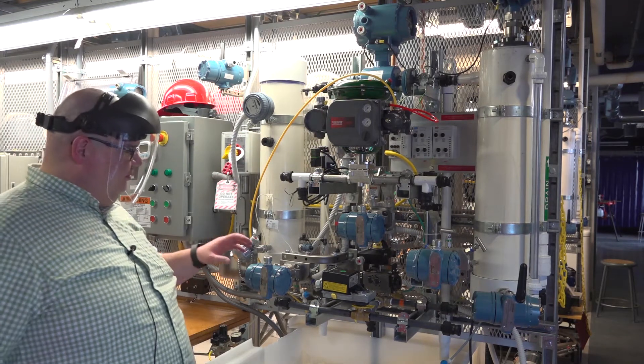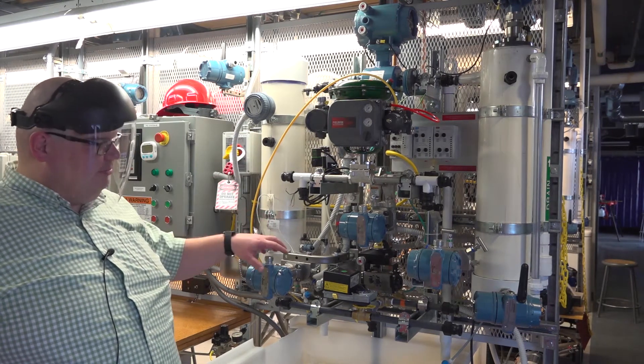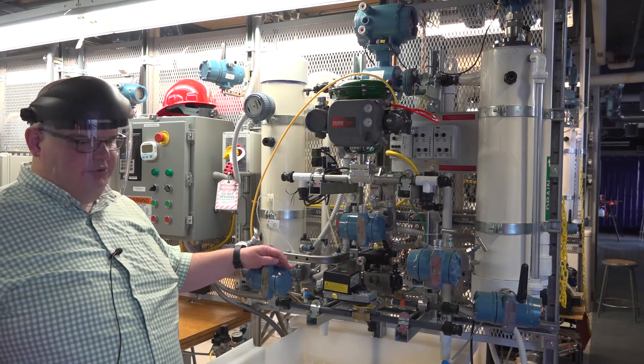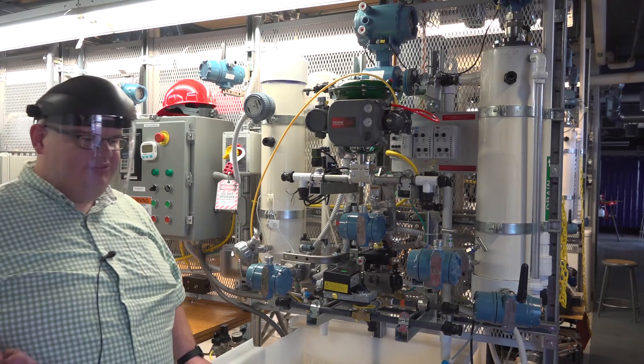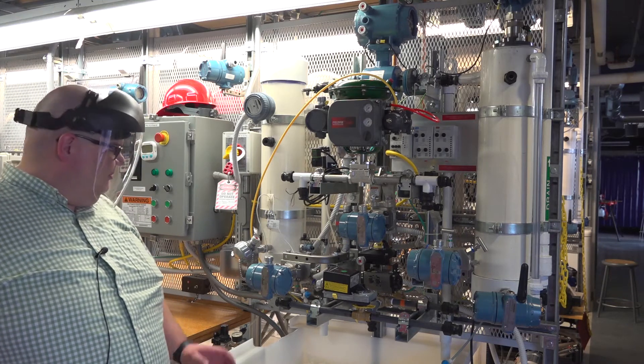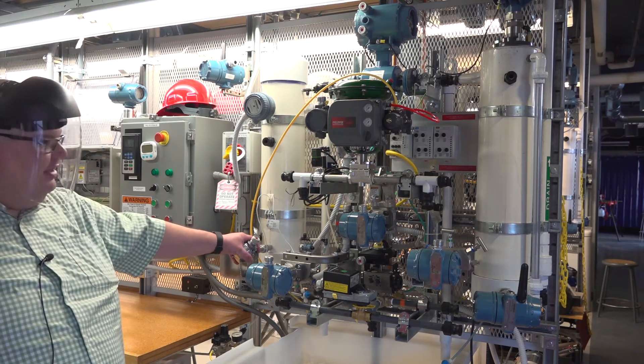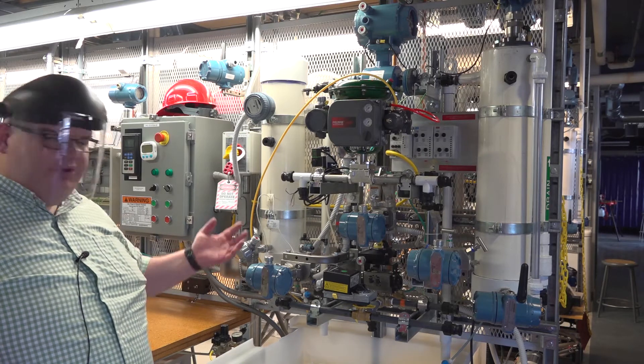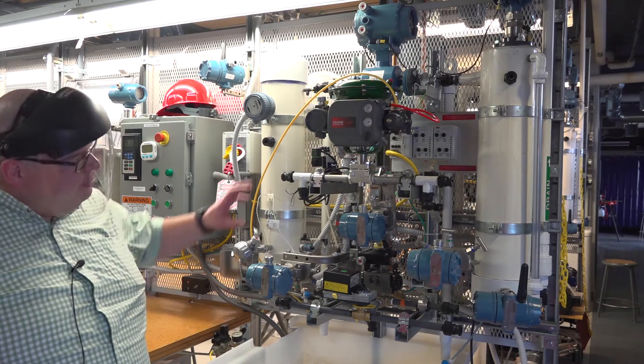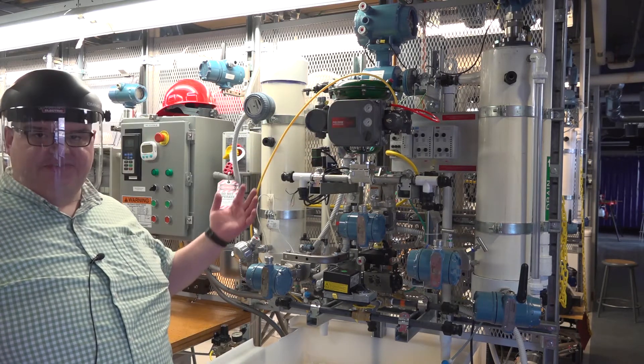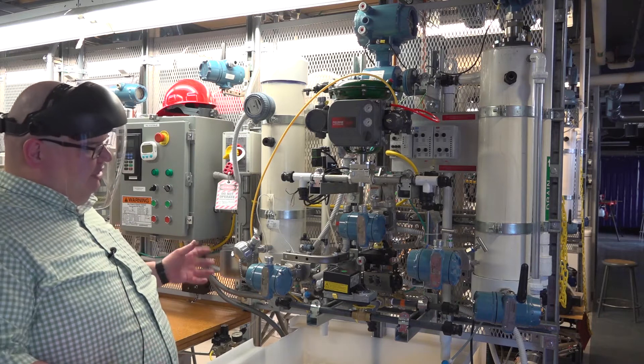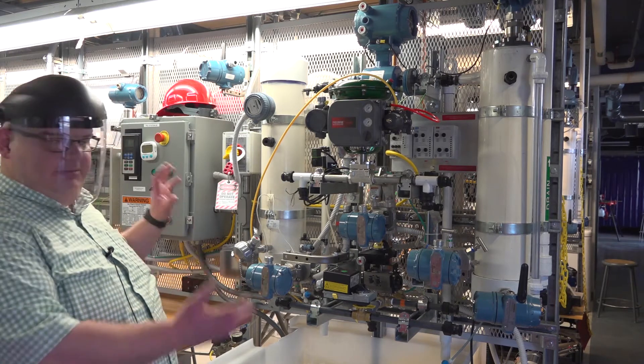In a typical plant, maybe we're controlling pasteurizing milk. We might have a temperature sensor measuring how hot the milk is. This would be an example like that temperature sensor. That would feed into a controller that would turn on and off a heater, or maybe open a valve like this to throttle steam. In the lab, we try to simulate those sorts of processes using this type of equipment.